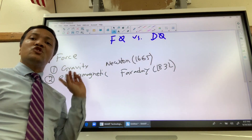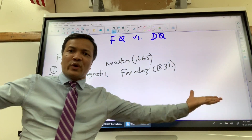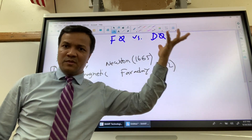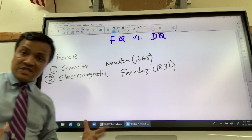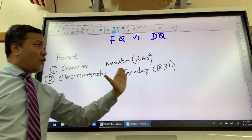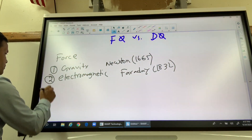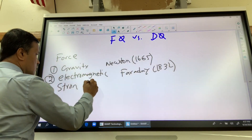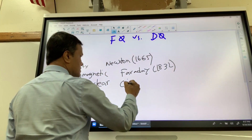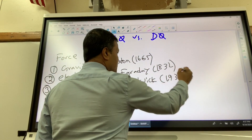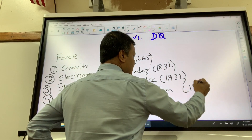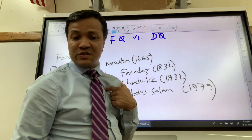Don't get confused: electric force was discovered by Coulomb, but electromagnetic force — the fundamental force — combines electric and magnetic force through Maxwell's equations, and was discovered by Faraday. Number three is strong nuclear force, discovered about 100 years after electromagnetic force, around 1979.